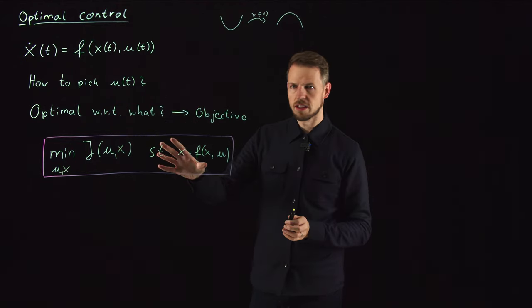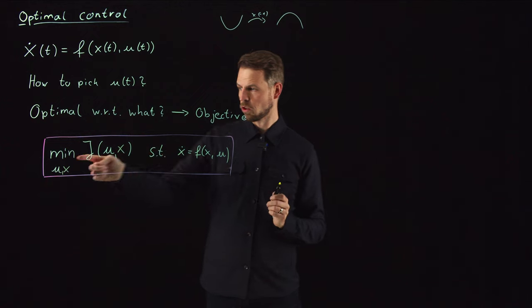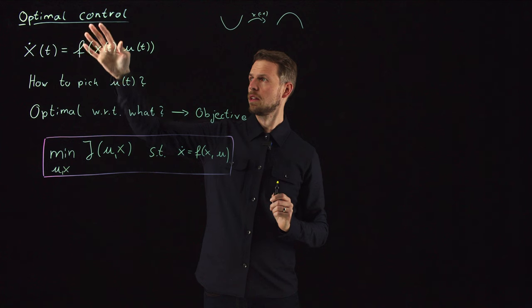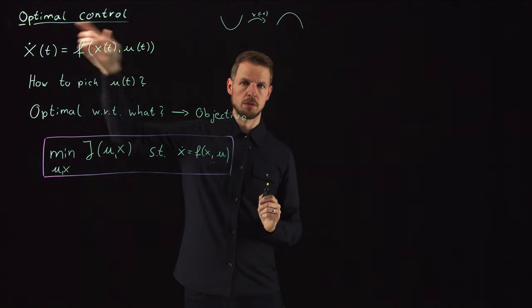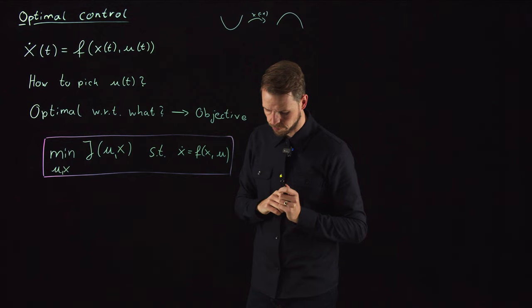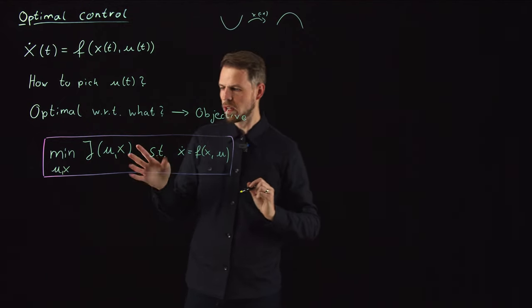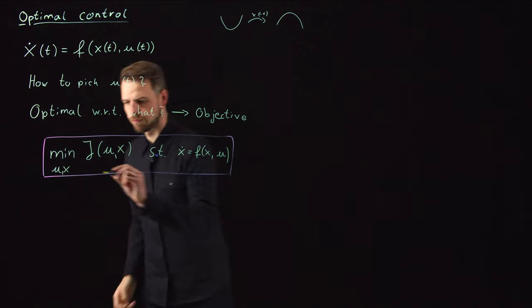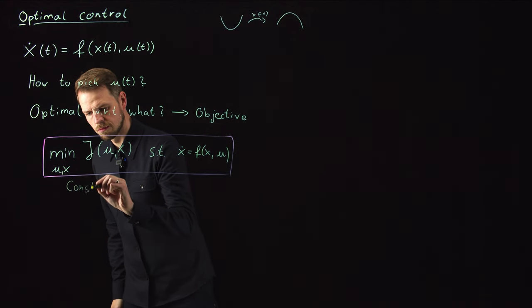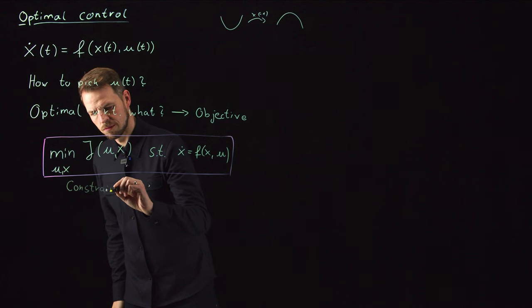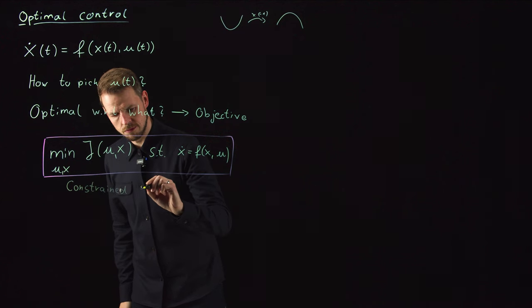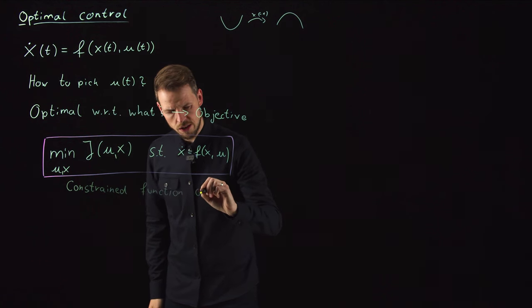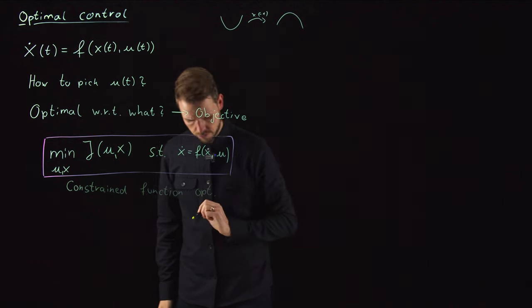The task in optimal control is to find a control function and the associated state so that our system behaves in optimal fashion with regard to this objective function. It's a constrained function optimization problem.